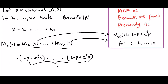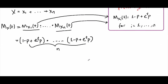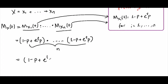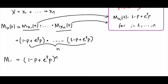So we have n of t, and we can take it to the power of n. So this is the moment-generating function of the binomial random variable: (1 minus p plus p·e^t)^n.